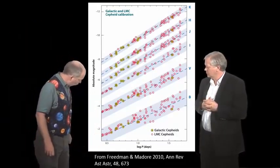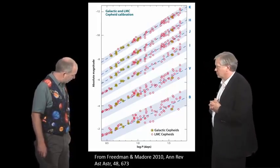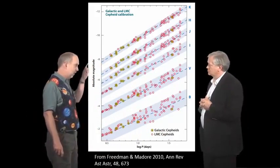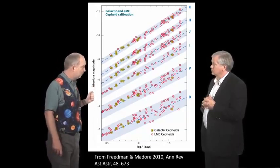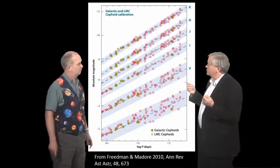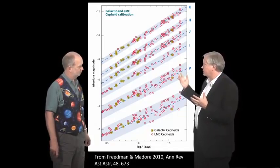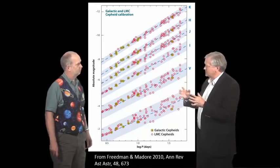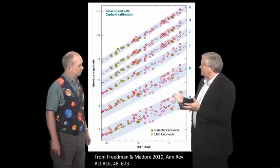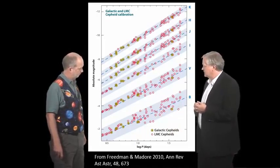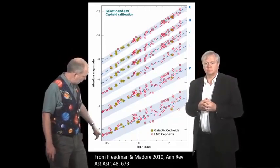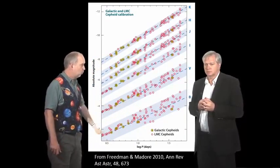Even more interesting is what's called the Leavitt Law, worked out by Henrietta Swan Leavitt in the early 20th century. She found that if you look at the pulsation period and the absolute magnitude - which tells you the luminosity, how bright they really are - there's a correlation between the two. It makes sense because big stars burn their nuclear fuel more quickly, so they're brighter. The pulsation depends on how big and extended the star is and how much gravity it has - they ring like giant bells. The period ranges from 10 days up to about 80 days, which is quite measurable.